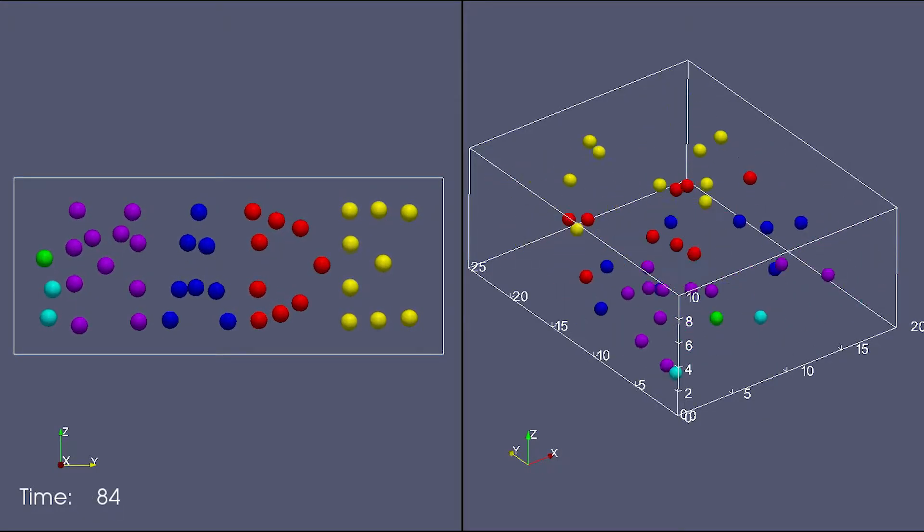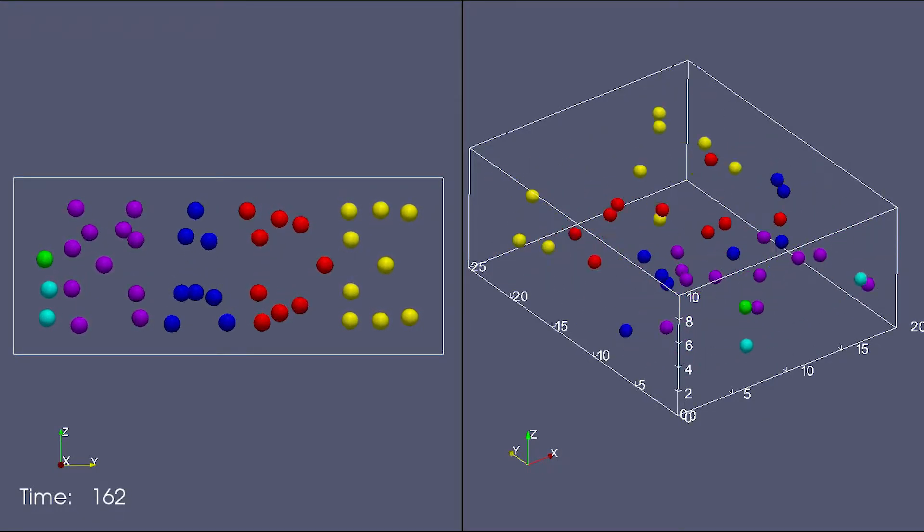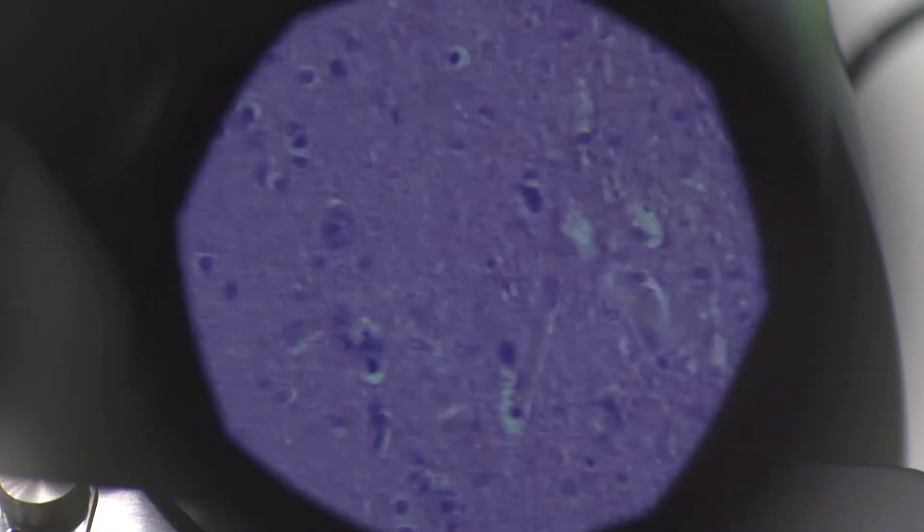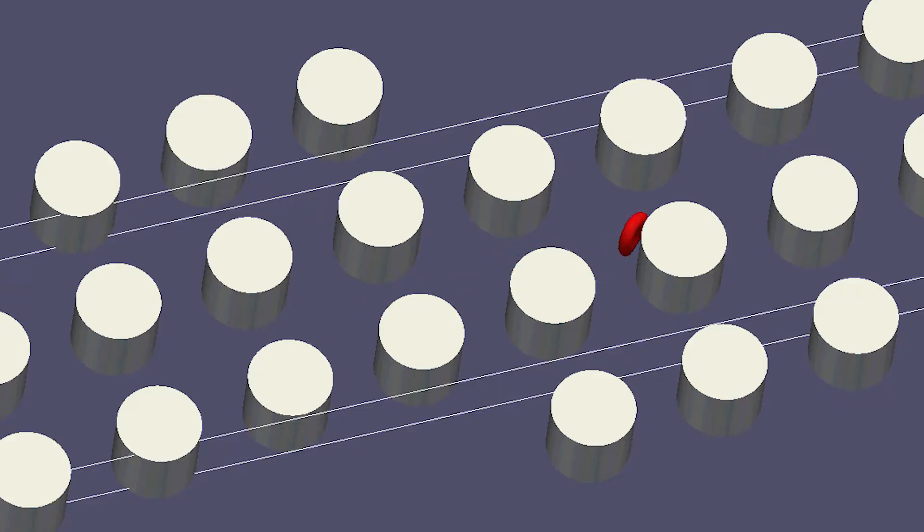iMADE lets users change the flow dynamics within the microchannel and also allows users to input cell types with different properties, mimicking real cell flow within a microfluidic chip.